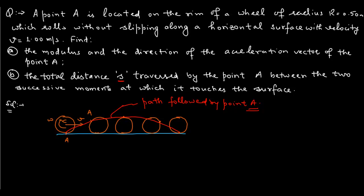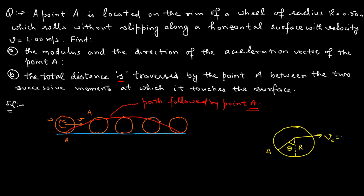As this wheel is rolling without slipping in this direction, we have to find the modulus and direction of the acceleration vector of point A. At any instant of time, let point A be here — this is the radius of the wheel — and at that instant let this angle be theta. It is moving towards the right, and the velocity of the center of mass is equal to r·omega, where omega is the angular speed.